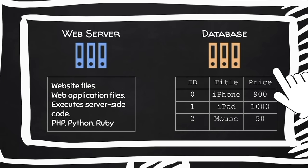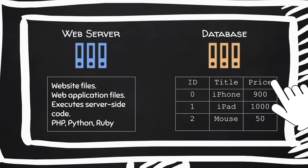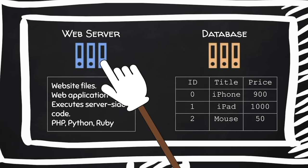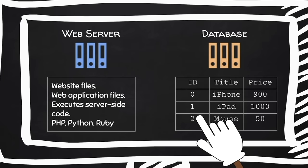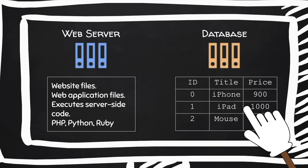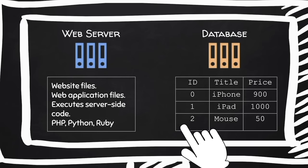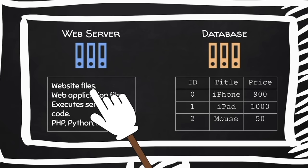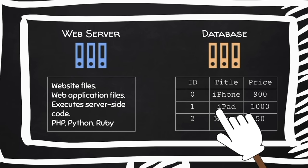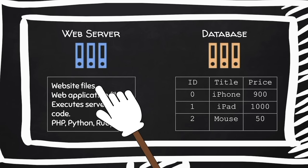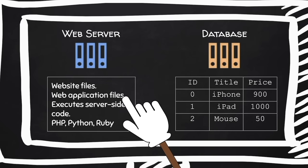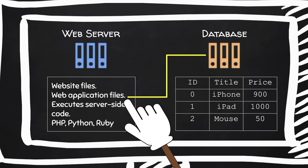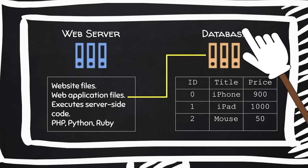The data is usually stored in a different application called a database. The database contains a number of tables — for example, a table containing products being sold on a shop website, with columns for ID, title, and price. The web server contains the HTML pages, the images, and a web application that interacts with the database to display all of these products. The product information itself is stored in the database, not in the web application.